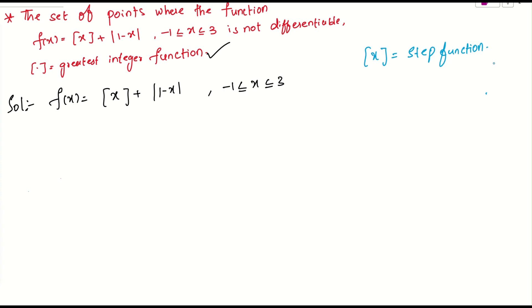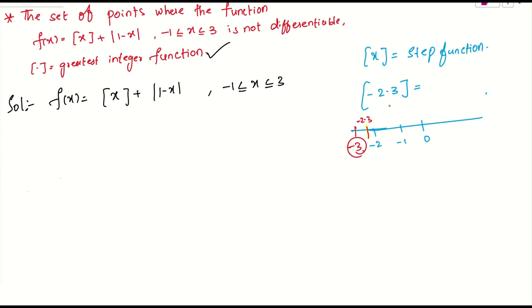The greatest integer function rounds down to the nearest integer less than or equal to the given number. For example, if we take minus 2.3 on the number line, the nearest integer to the left is minus 3. So box(-2.3) = -3. Similarly, for 2.7, the nearest integer to the left is 2, so box(2.7) = 2.